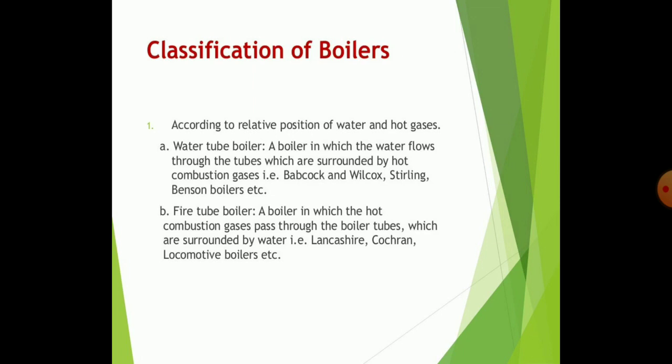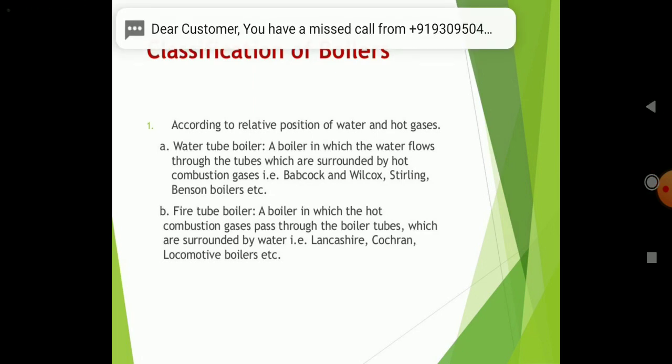What are water tube boilers? A water tube boiler may be defined as one in which the water flows through the tubes which are surrounded by the hot combustion gases. Babcock and Wilcox boilers are named after the scientists who invented this kind of boiler. In this type, the gases are heated and they surround the tubes through which water flows.